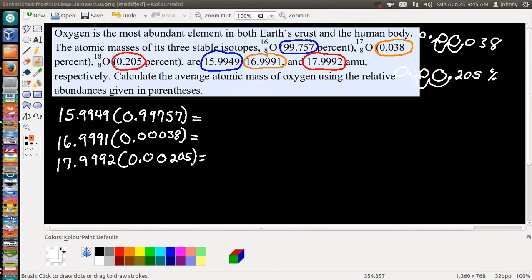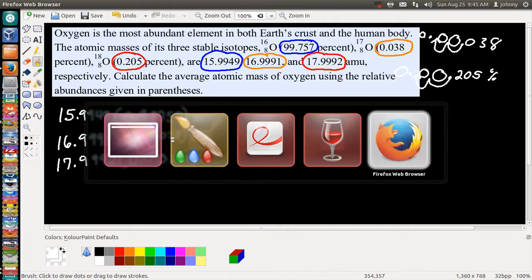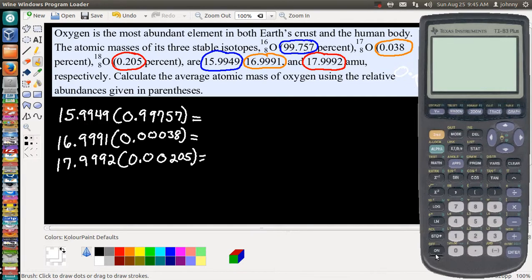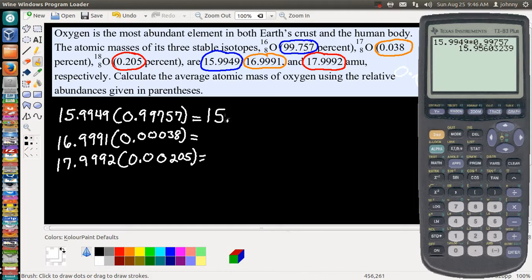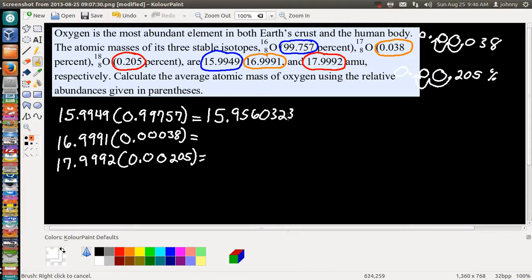Now let's go ahead and multiply these together on a calculator because in all honesty I don't want to do it by hand right now. So let's use our calculator. We have 15.9949 and we're going to multiply it with 0.99757. Make sure you push everything in right. Press Enter, and there's our answer. We will have 15.95603239.